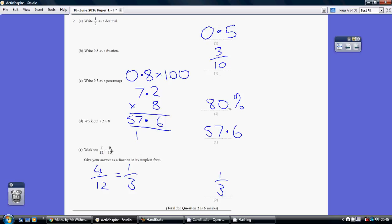Had it been 7 add 3, it would have been 10. But just be careful, the denominator does not change. So 7 over 12 take away 3 over 12 is 4 over 12.